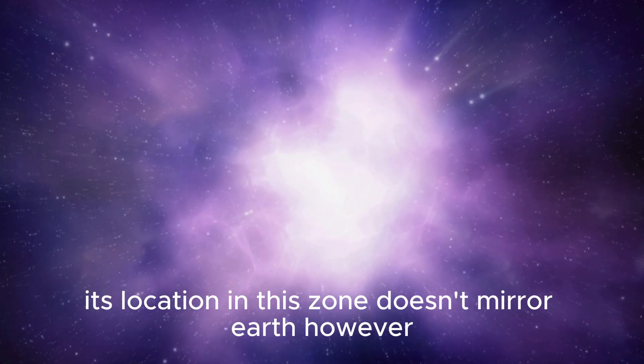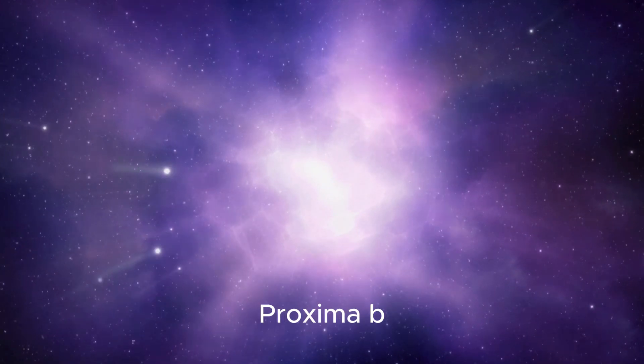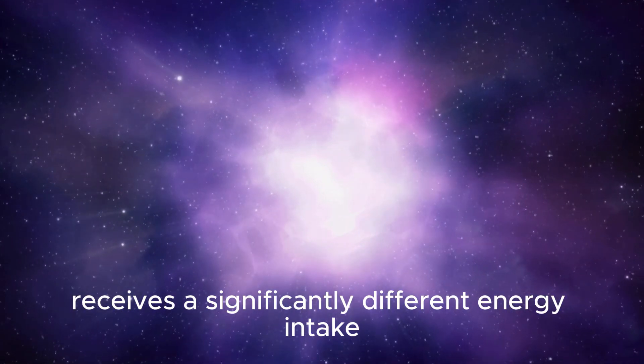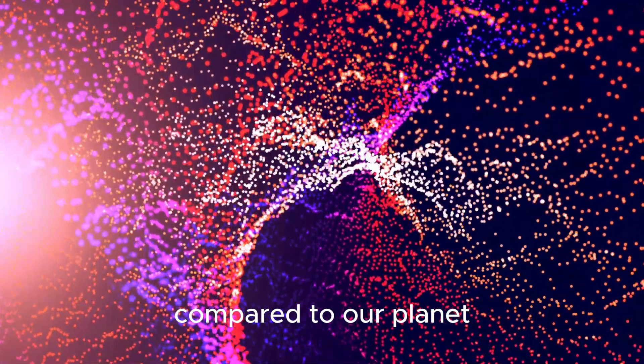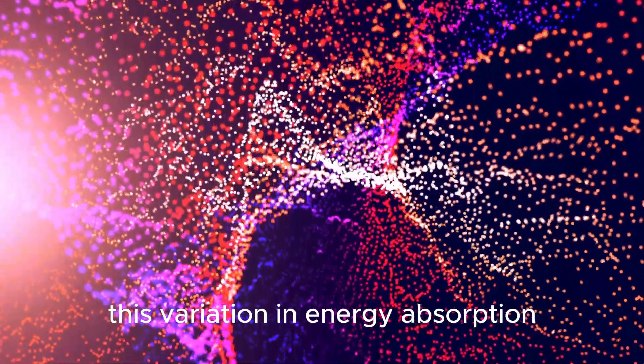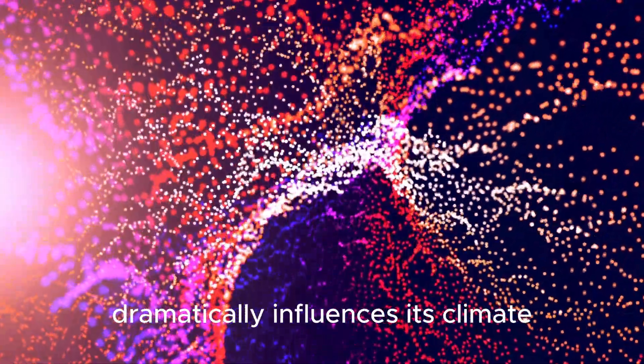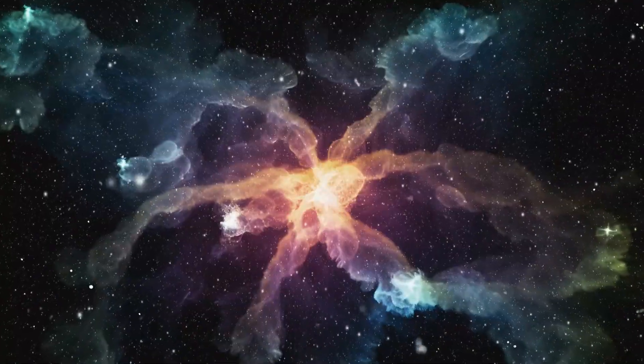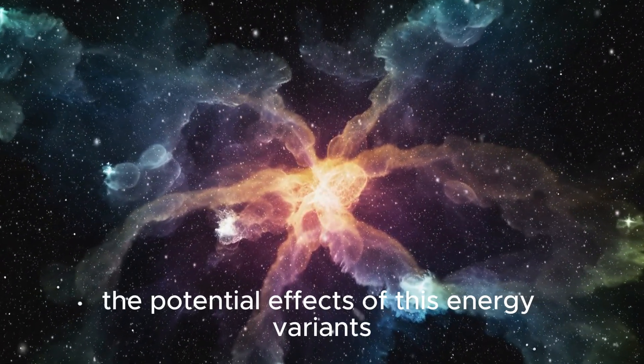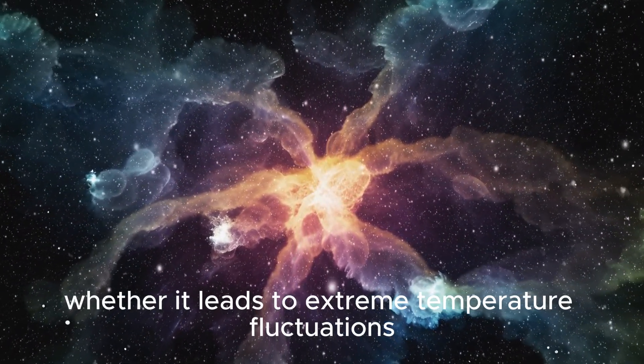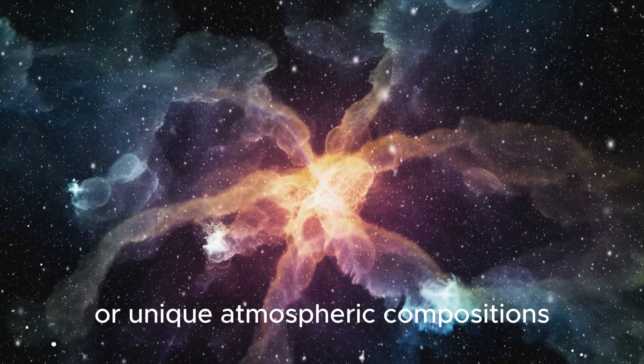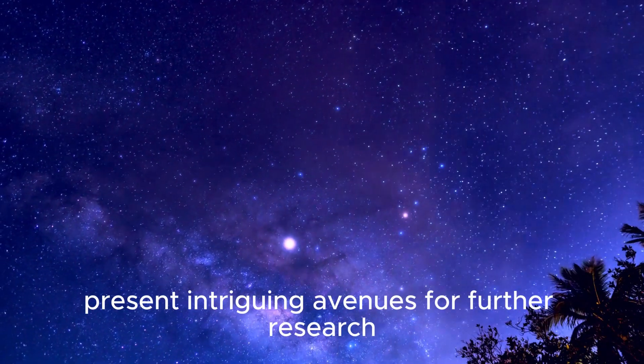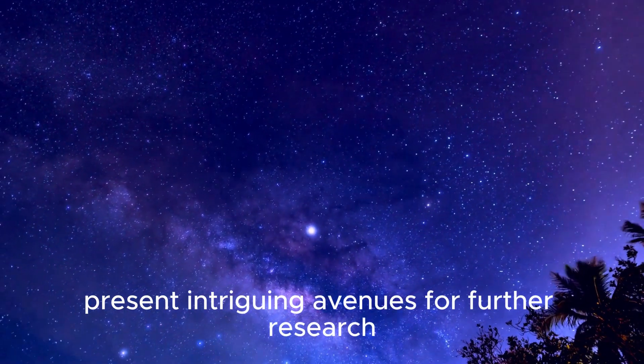Its location in this zone doesn't mirror Earth's. However, Proxima b receives a significantly different energy intake compared to our planet. This variation in energy absorption dramatically influences its climate, surface conditions, and overall habitability. The potential effects of this energy variance, whether it leads to extreme temperature fluctuations or unique atmospheric compositions, present intriguing avenues for further research and understanding.